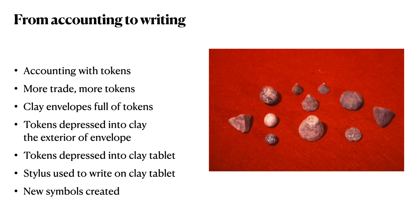Following this development, tokens were subsequently depressed into clay tablets, giving a mechanism for recording without needing the tokens themselves to be stored. Later, instead of using tokens to create impressions in the clay tablet, a stylus was used to etch symbols onto the clay tablet. And eventually, new symbols, such as symbols for numbers, were created.